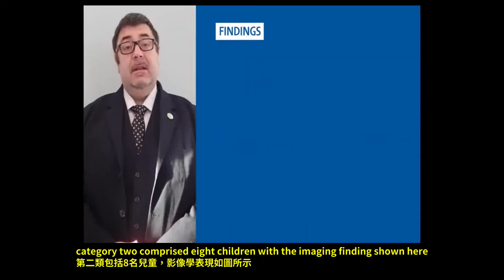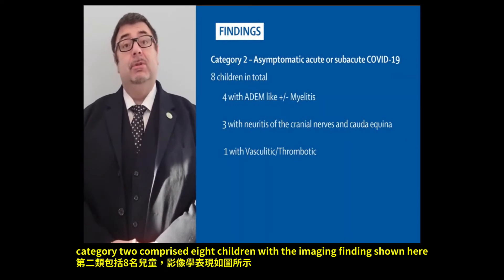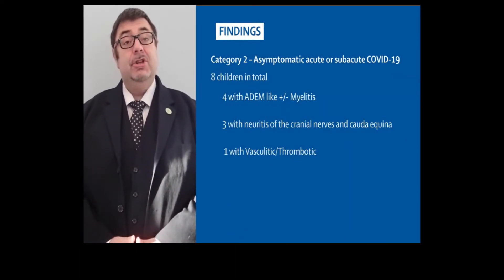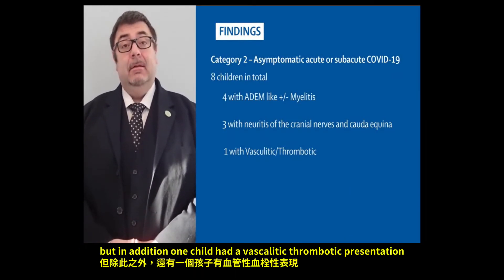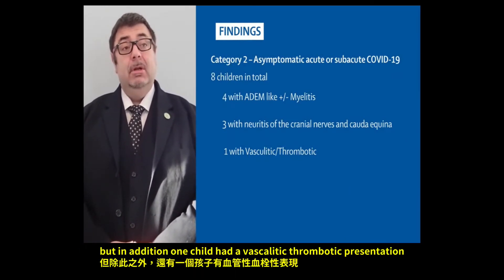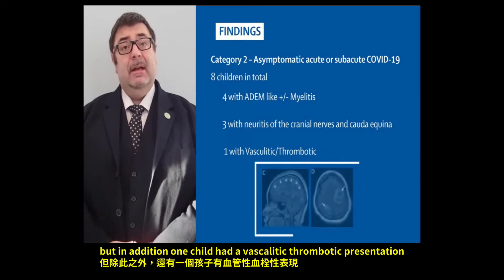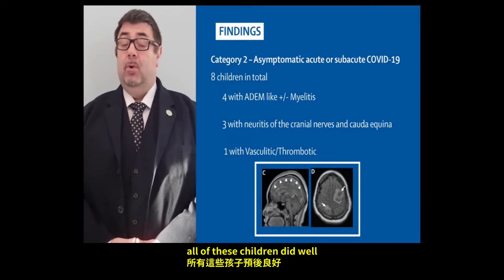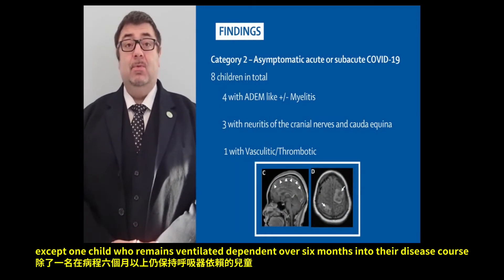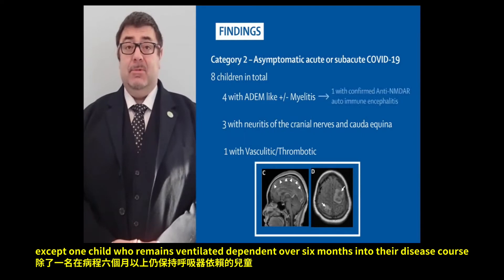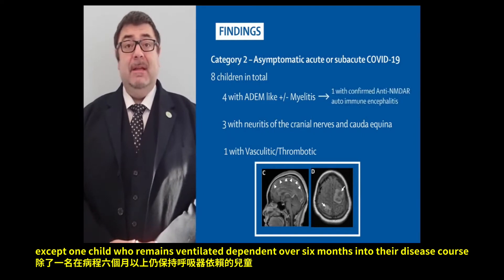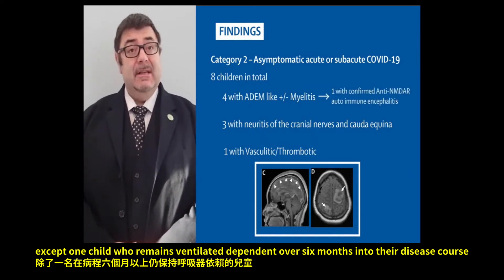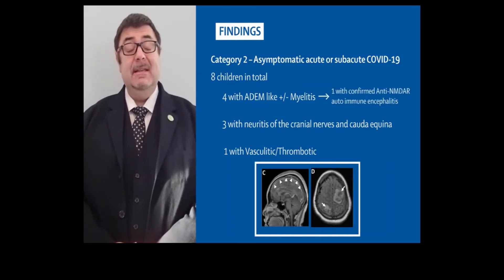Category two comprised eight children with the imaging findings shown here. In addition, one child had a vasculitic thrombotic presentation. All of these children did well except one child who remains ventilator-dependent over six months into their disease course.